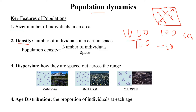The third key feature is dispersion — how individuals of a particular species spread across a range. Dispersion can be random, meaning individuals are found without any uniform pattern. Uniform dispersion means individuals are spread evenly across the area. Clumped dispersion means individuals form groups or clumps, like a school of sardines.